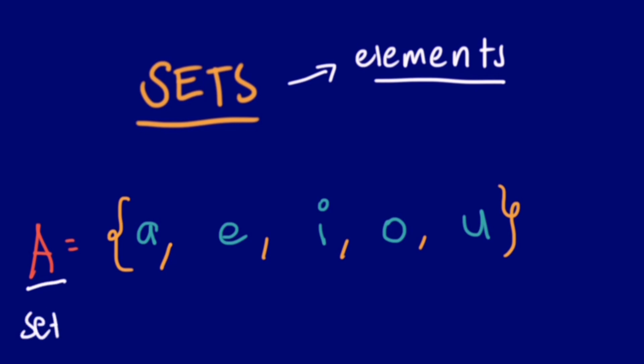In this particular example, capital A is the name of the set and small letter a is one of its elements. Let's have another example. Let's try to make a set out of the items that we wear. We have hat, we have shirt, we have pants, and so on and so forth. Now we name this set B.